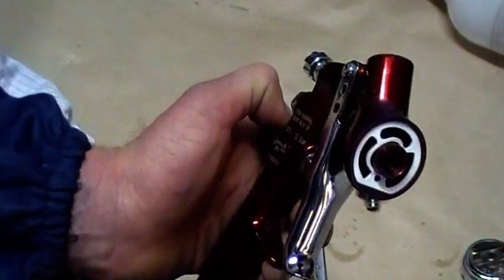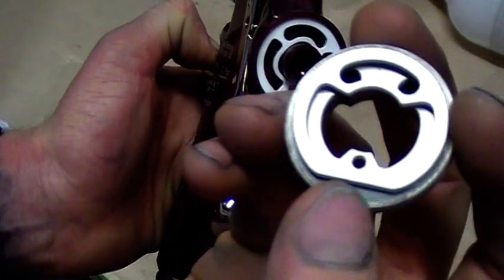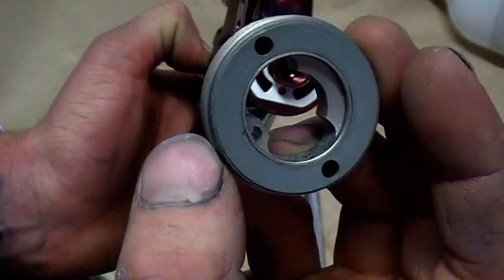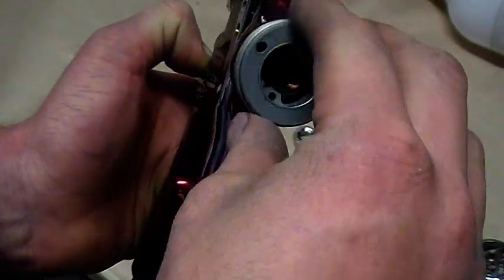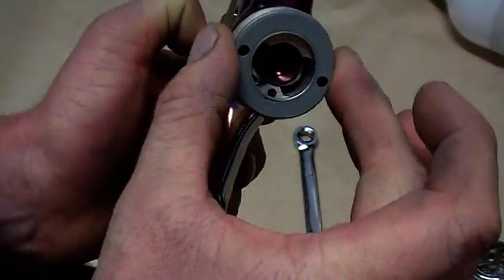Make sure when you put this on, you can see there's this little cutout here. It'll only go on one way, and you can just twist it around and you'll feel that it's sat in there.